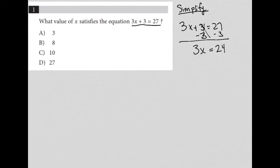So 27 minus 3 is 24. Then I can divide by 3 on both sides, which finally does isolate the x value. And 24 divided by 3,